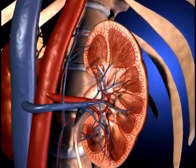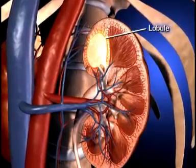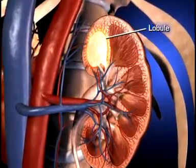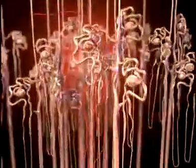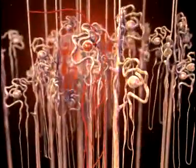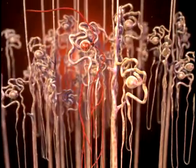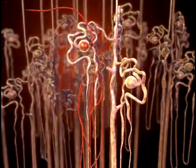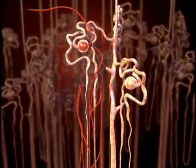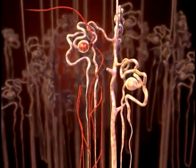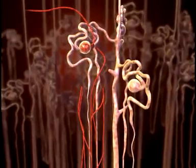The kidney is composed of up to 18 lobes. Each lobe is composed of nephrons. Nephrons are the functional units of the kidney, and each kidney contains more than one million nephrons.